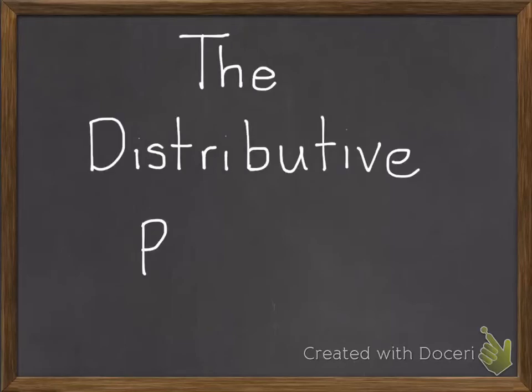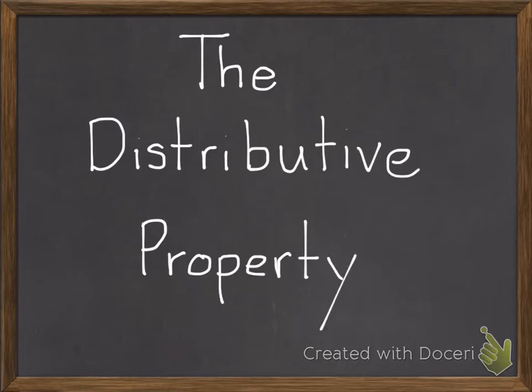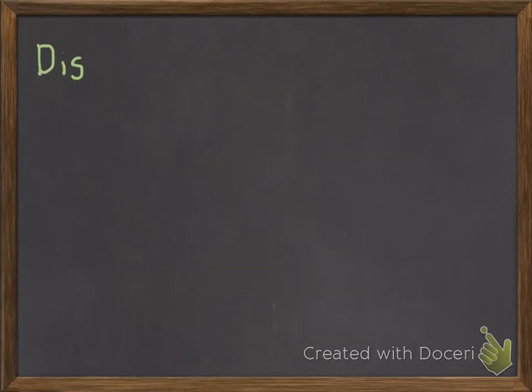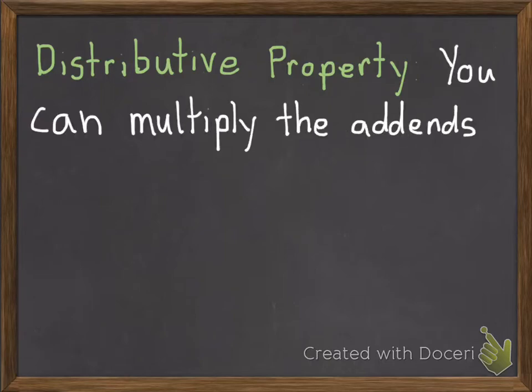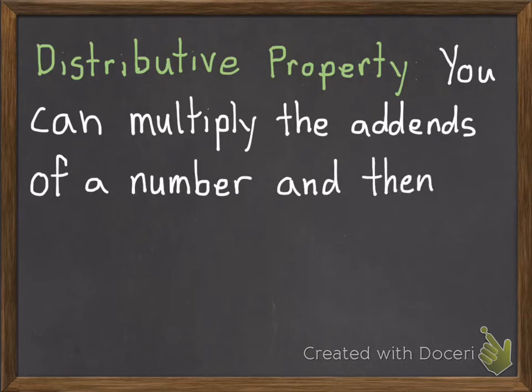Today we are going to learn about the distributive property. Go ahead and write the distributive property down in your vocabulary. The distributive property says that you can multiply the addends of a number and then add the products.